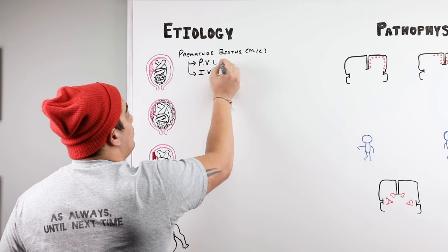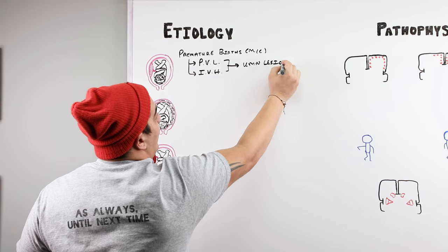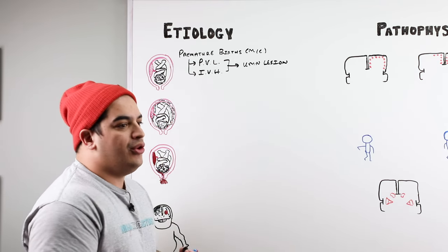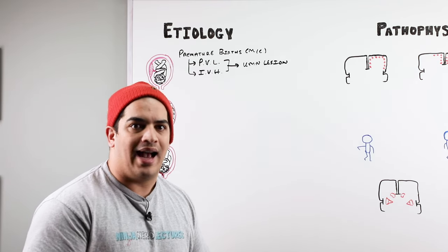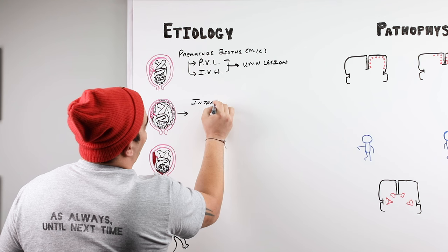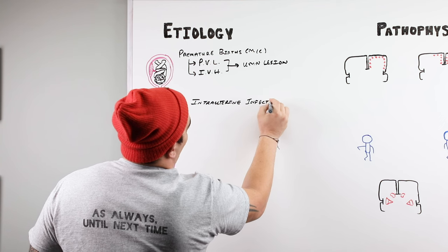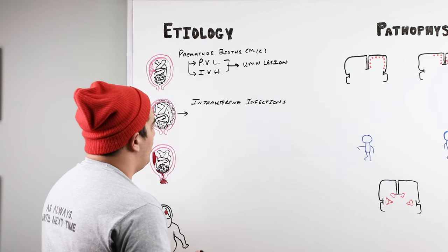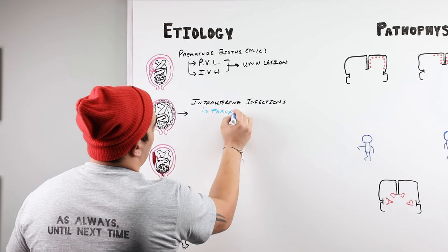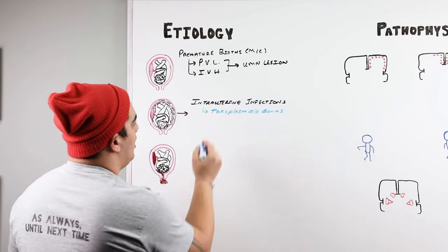These types of insults lead to the actual upper motor neuron lesion that you see with cerebral palsy. Another major etiology is intrauterine infections — infections that arise during the prenatal period. We remember these via the mnemonic TORCH: T is Toxoplasmosis, R is Rubella, C is Cytomegalovirus, and H is Herpes simplex viruses.